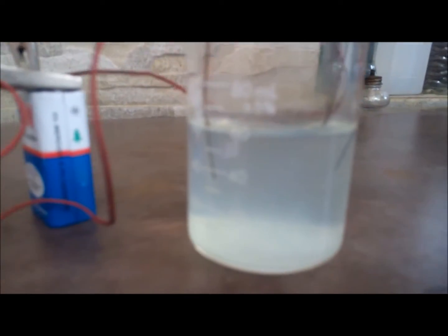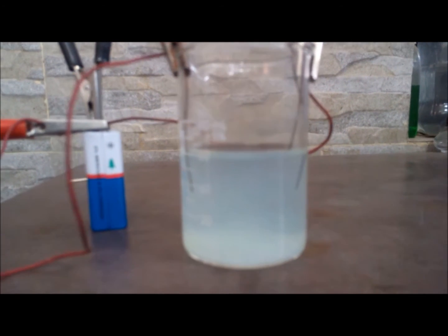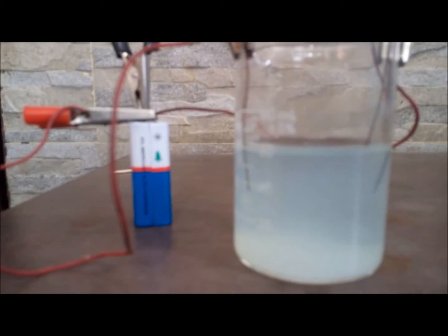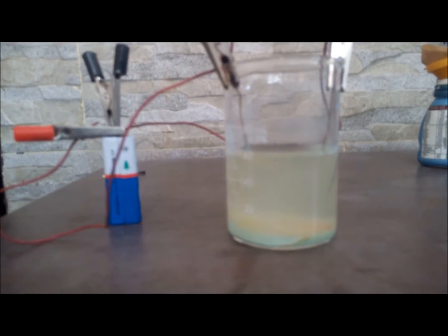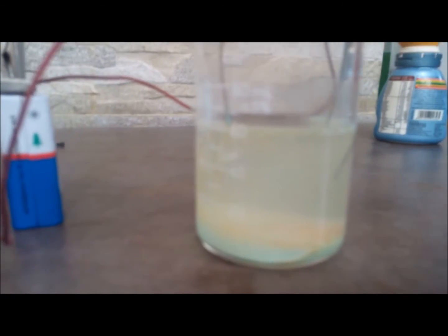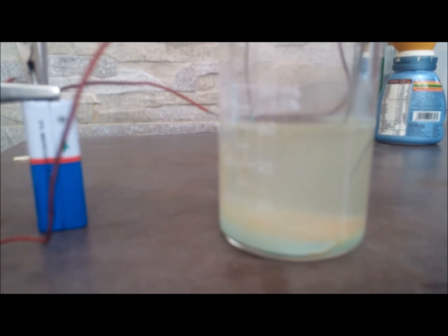You can see more cupric hydroxide has been formed. You can see the blue color. Here is the interesting part of the reaction. Notice the red-yellow coloration, the red-yellow layer above the cupric hydroxide layer at the bottom.